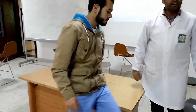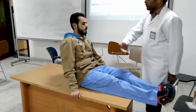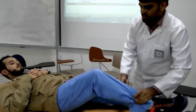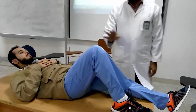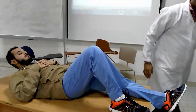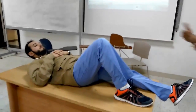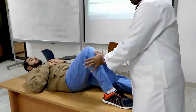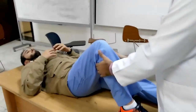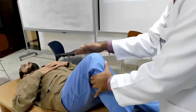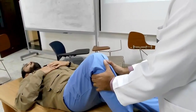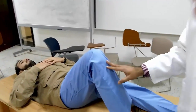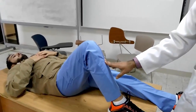For the anterior drawer test: patient is in supine lying position, hip 90 degrees flexion, knee 90 degrees flexion. The therapist stands in front of the patient, places thumbs over the tibial tuberosity with fingers on the posterior side. Ask the patient to relax the quadriceps, then pull the tibia anteriorly. If the patient complains of pain or instability, the test is positive.